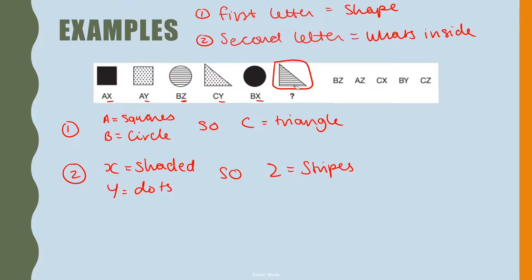Now we know how to work out this question. We have a triangle, which is a letter C. And we have stripes, which is Z. Our answer is CZ. Let's see if we're correct. Yes, we are.